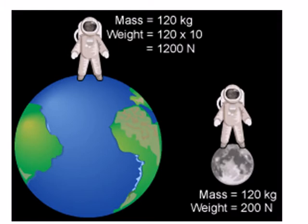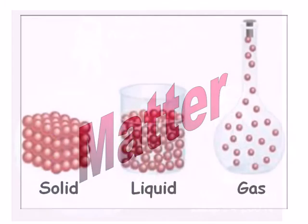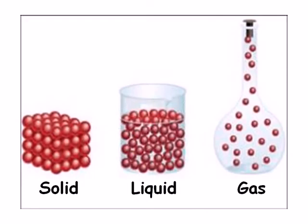Matter exists in three states: solid, liquid, and gas. Solids have a definite shape and a definite volume. Liquids have a definite volume but conform to the shape of their container. And gases have neither definite shape nor a definite volume.